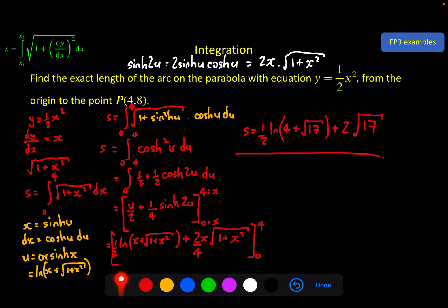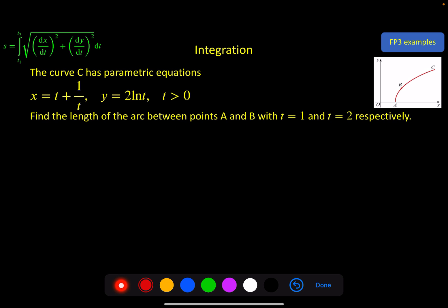The hard part is knowing which techniques to apply for which problem — they won't all be like this. Let's do one more example, this time using the parametric version. We have a curve with parametric equations x = t + 1/t and y = 2 ln(t), where t > 0. We need to find the length of the arc between points A and B, where t = 1 and t = 2 respectively.